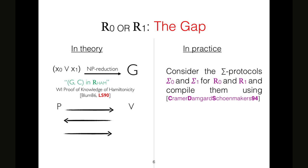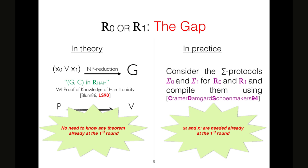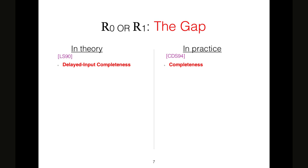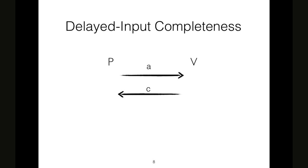If we implement the proof of knowledge by using LS90, as I said before, we have that the prover does not need the theorem to complete the first round, but unfortunately this property is not enjoyed by CDS. Let me be more precise about the gap between CDS and LS. On the left, LS enjoys delayed input completeness. What is it? That is that prover and verifier can compute the first two round interaction of the protocol without any additional input, without theorem and witness as input, witness only for the prover, clearly. And only to compute the third round, the prover needs the witness, clearly.